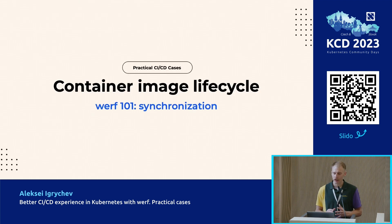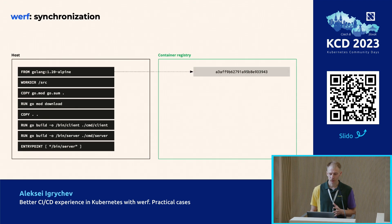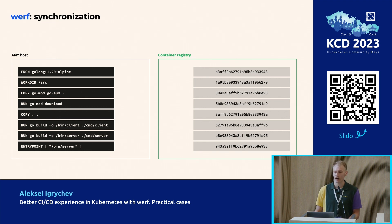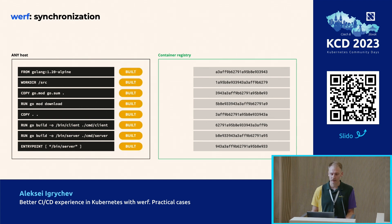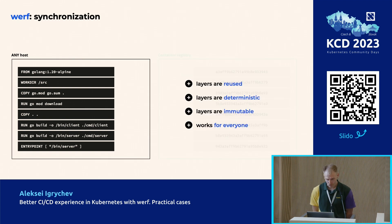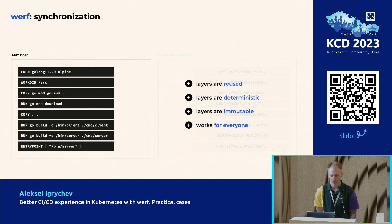Werf builds, tags, and publishes an image for each layer into the container registry. This is done the same way for each layer. Then we run the same build on an arbitrary host — any host. As a result, nothing happens, because all the layers are already built and stored in the container registry. We don't push anything from the host and don't pull from the registry — nothing at all. In summary: layers are reused between all builds, layers are determined on the same principle as with Docker, layers are also immutable, and Werf coordinates the work of all builders.